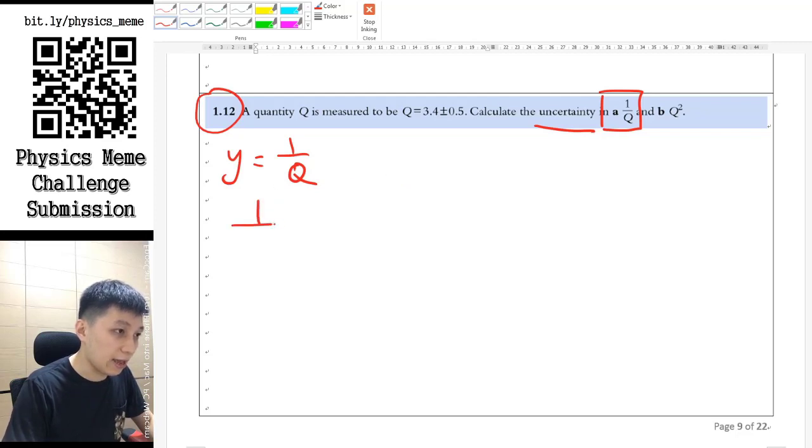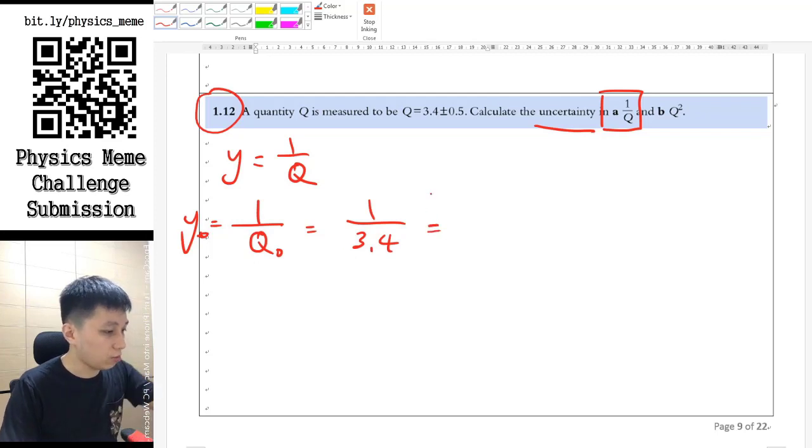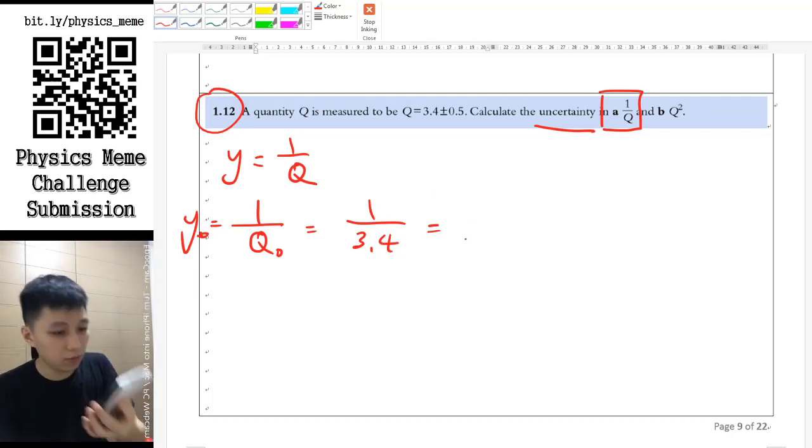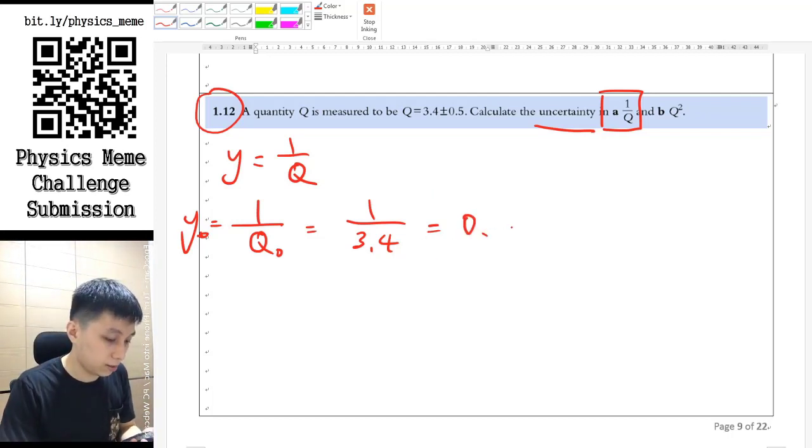So what we do need to do is find the average value first. So y log would equal 1 over q log, which is 1 over 3.4. And in terms of the number, it will equal a long decimal point, which I will keep as 2 sig figs, so 0.29.